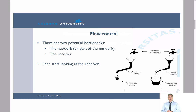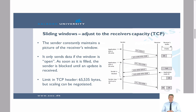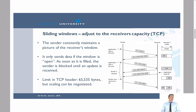This is why we use what is called sliding windows. The sender constantly maintains a picture of the receiver's window — that is, how much data the receiver is able to absorb at a given point in time. We can only send data if the window is open, and as soon as it's filled, the sender is blocked.